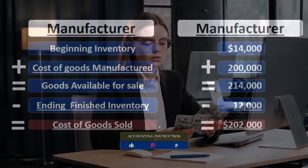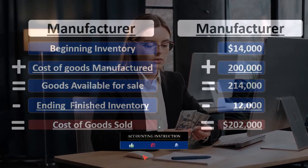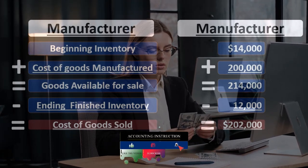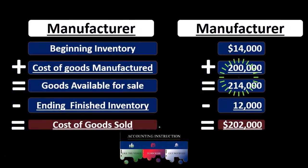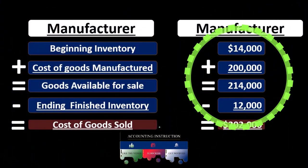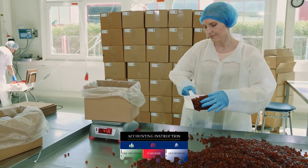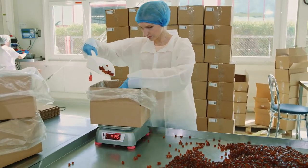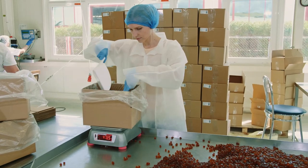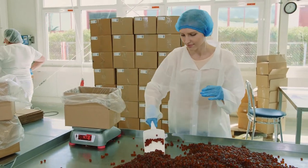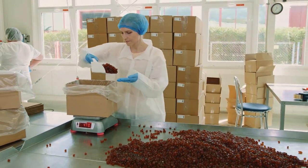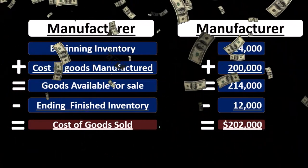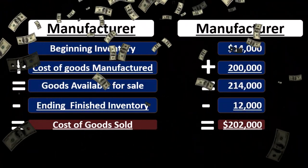Cost of goods sold is our most important expense on the income statement for a manufacturer, because the things we make are typically our highest cost. Therefore, we break it out separately, with sales minus cost of goods sold giving us the subcategory of gross profit on the income statement.